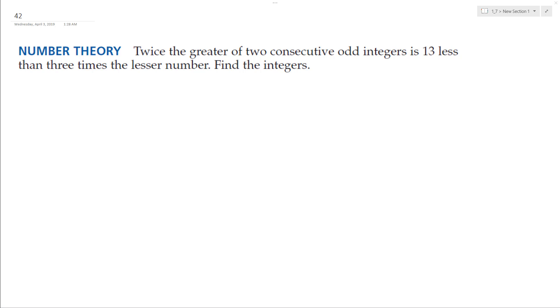Let's find a number. Twice the greater of two consecutive odd integers - so two times x plus two, because it's going to be odd and to have another odd you have to have two more - is 13 less than three times the lesser.